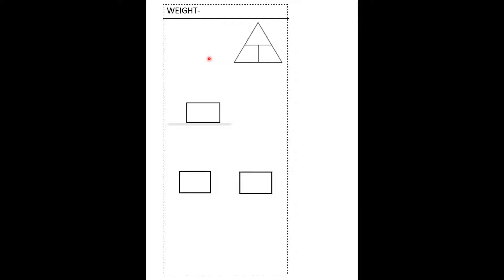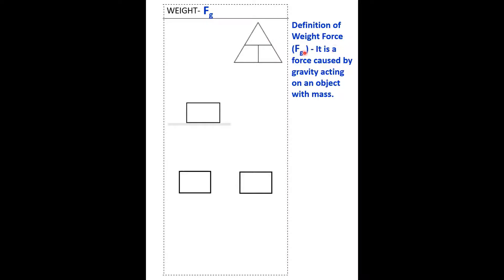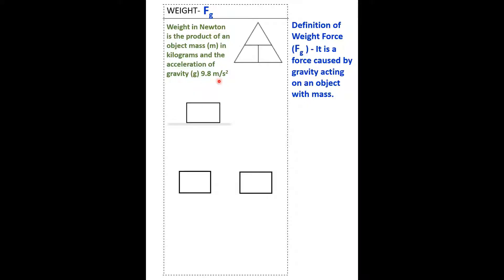The second type of force is weight, or F-G. The definition of weight force F-G: it is a force caused by gravity acting on an object with mass. Weight in newtons is the product of an object's mass M in kilograms and the acceleration of gravity G, which is 9.8 meters per second squared. So, the weight force F-G depends on the mass of an object and the acceleration of gravity.